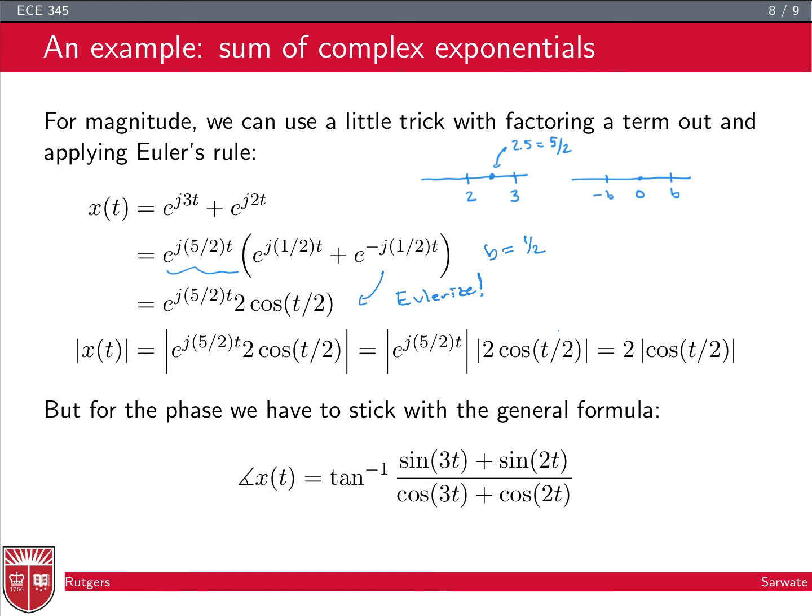We get this complex exponential times 2 cosine t over 2. So to get the magnitude, it's a product of two signals. We take the magnitude of the products. This term is equal to 1, and then we have 2 cosine t over 2, absolute value of that, and so we get 2 times this rectified cosine. So it helps to kind of sketch this out so you have a picture. Always draw a picture because it gives some intuition. So we have this cosine, which has been rectified, fully rectified.